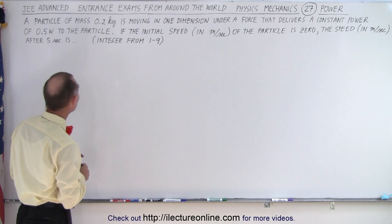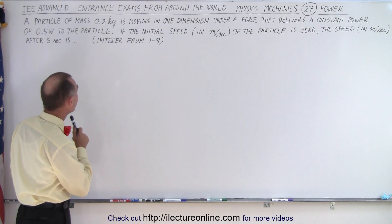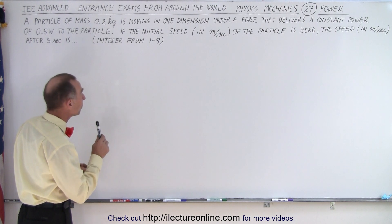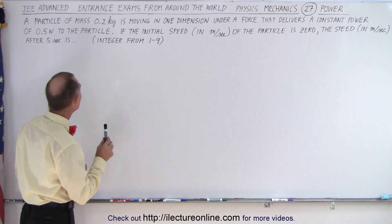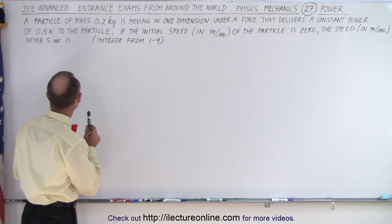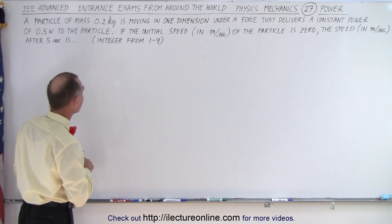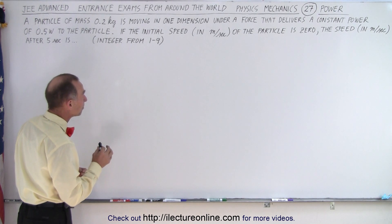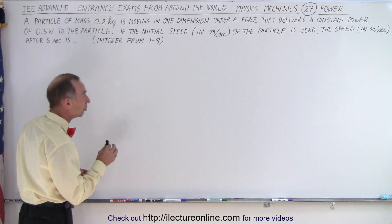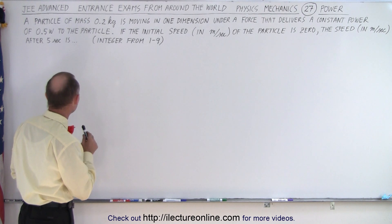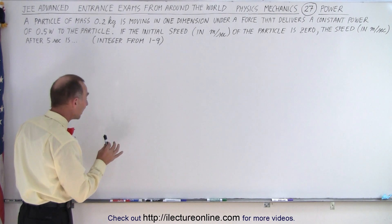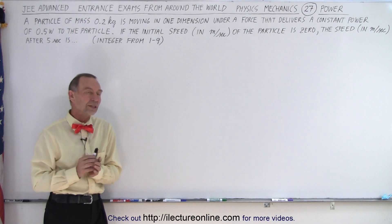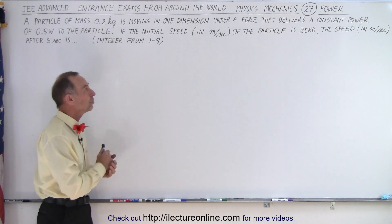A particle of mass 0.2 kilograms is moving in one dimension under a force that delivers a constant power of 0.5 watts to the particle. If the initial speed in meters per second of the particle is 0, the speed in meters per second after 5 seconds is — and we're looking for an integer quantity from 1 to 9.